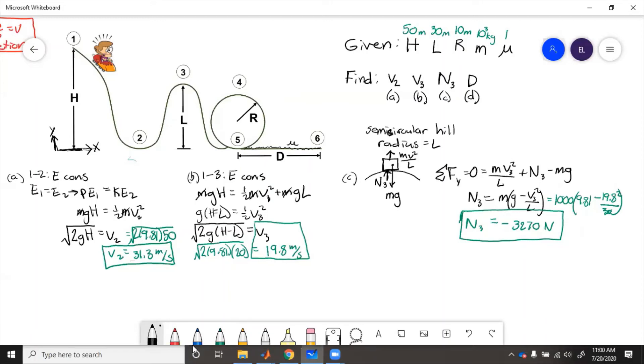Finally, we need to find the stopping distance. We know that from one to six work and energy, energy is not conserved. From a free body diagram, we can see here between five and six, we've got weight pushing down, normal force pushing up, friction from the track. So sum of the forces in the y equals zero, n equals mg, f friction equals mu mg.